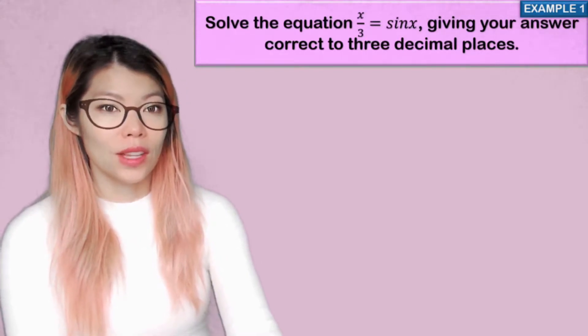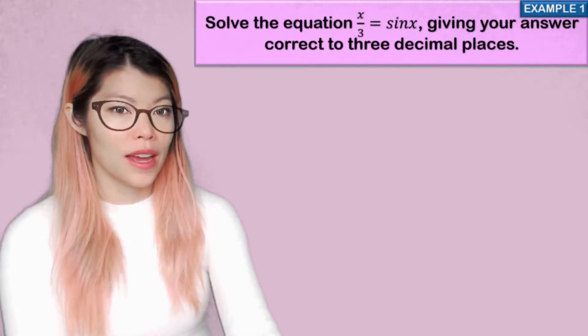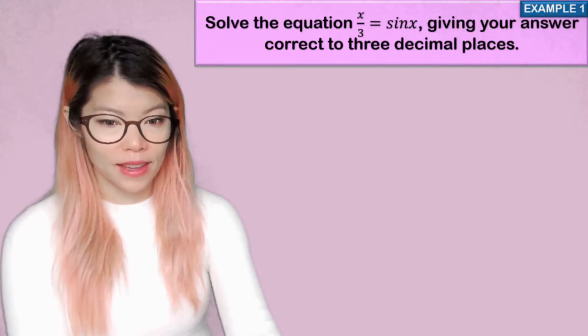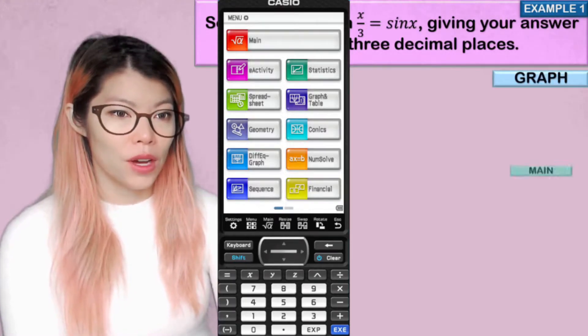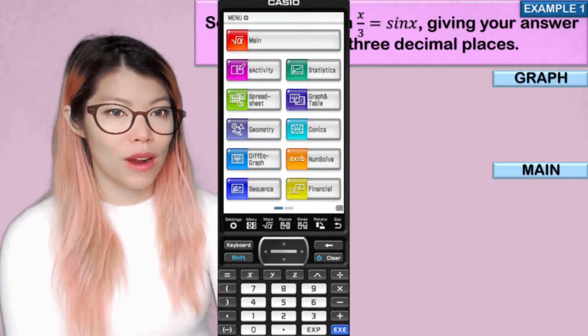Example 1. Solve the equation x over 3 equals sin x, giving your answer correct to 3 decimal places. So let's take out our CAS. Now what do we do? We can go to graph or we can go to main. Let's try graph first.